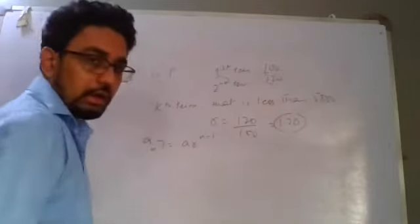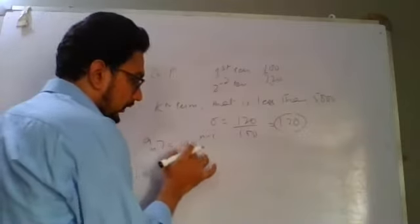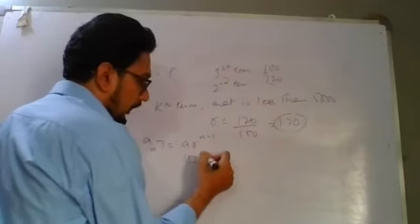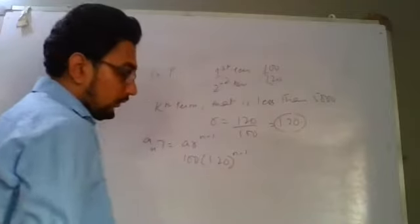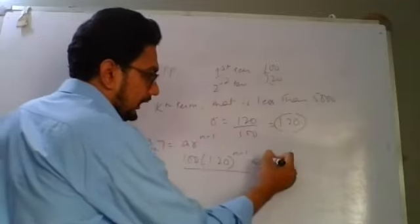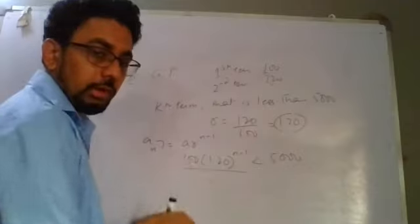What do you have to do? That is, it is less than 5000. So A is 100, R is 1.2 to the power N minus 1. This is the last term and any term that is less than 5000.